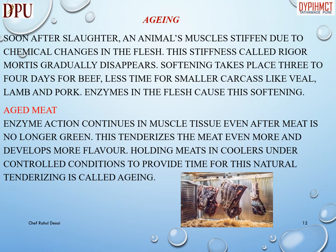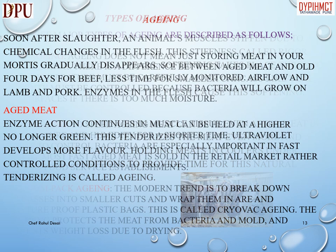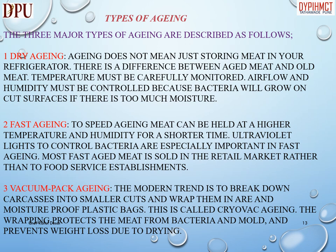Aging: soon after slaughter, animal muscles stiffen due to chemical changes in the flesh. This stiffness, called rigor mortis, gradually disappears. Softening takes place three to four days for beef, and less time for smaller carcasses like veal, lamb, and pork. Enzymes in the flesh cause the softening. With aged meat, enzyme action continues in muscle tissue, tenderizing the meat even more and developing more flavor. Holding meats in coolers under controlled conditions to allow this natural tenderizing is called aging. There are three major types of aging.